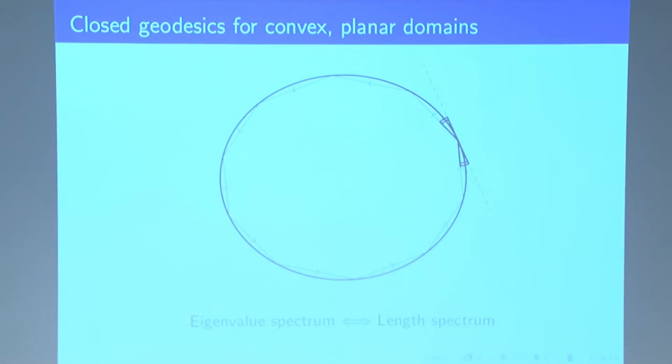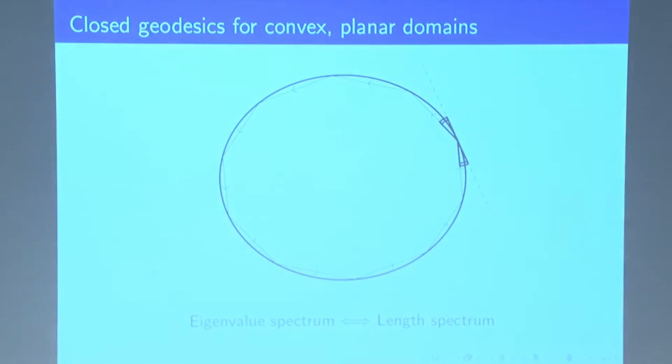So first, I need to define what a geodesic is. So let's pretend our drum is actually a pool table. And I take a billiard ball and I hit the ball off the boundary and it bounces like how any ball would, according to the law of reflection. And if we let our ball bounce around the boundary and then return to its original spot, then what we have is a closed geodesic. So a geodesic is the path that it travels.